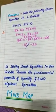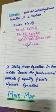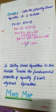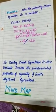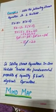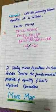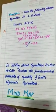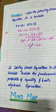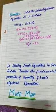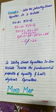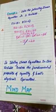Solving a linear equation in one variable involves the fundamental properties of equality and basic algebraic operations. I hope these examples are clear to all. At last, I would like to brief about this concept using a mind map, which learners can use to understand it better.